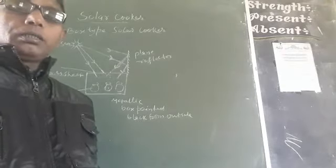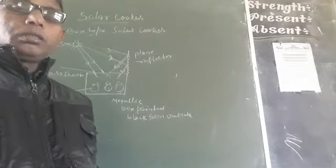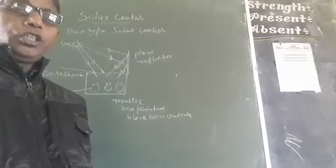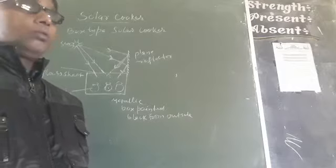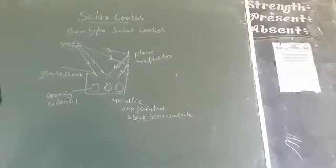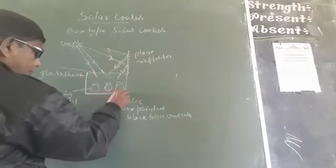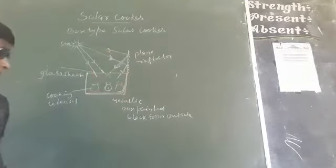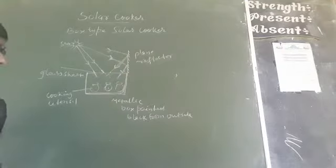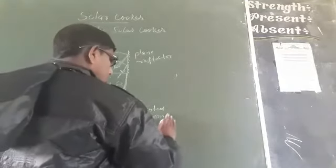In class 10, I have to teach box type solar cooker which is drawn on the board. See here, a box type solar cooker consists of a metallic box painted black from inside.